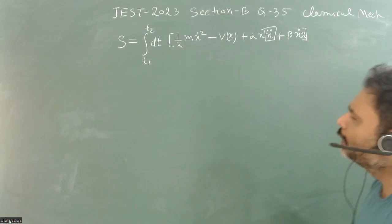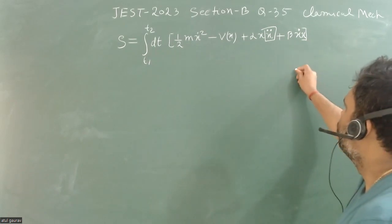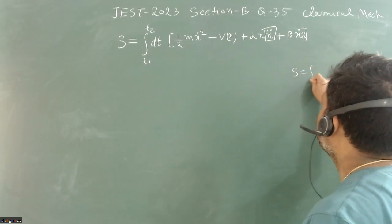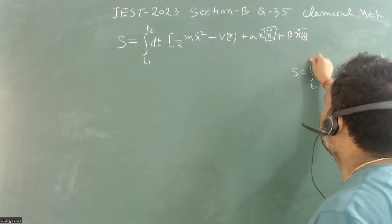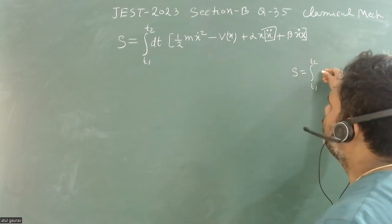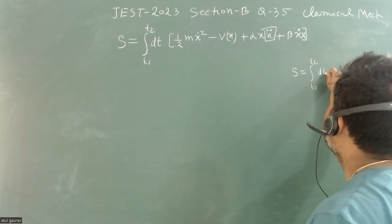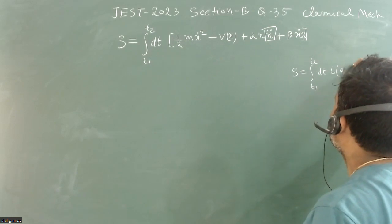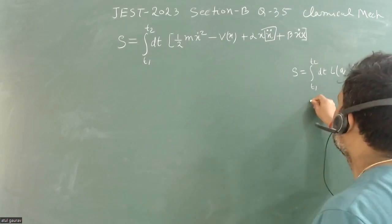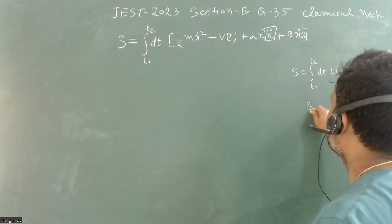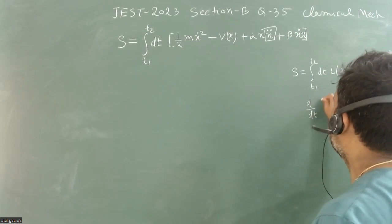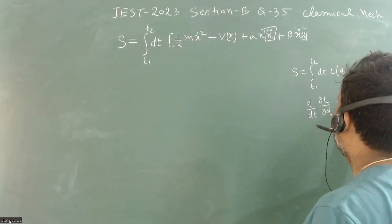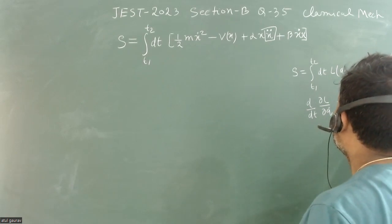In general classical mechanics, we have learned that S is given as the integral from t1 to t2 of dt times L, as a function of generalized coordinate, generalized velocity, and time. Then the equation of motion is given by d/dt (∂L/∂q-dot) minus ∂L/∂q equals zero.